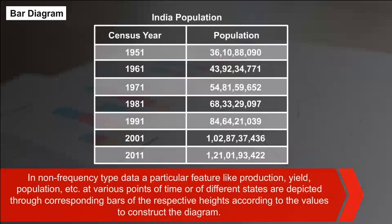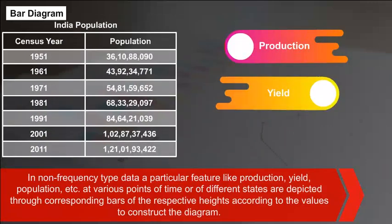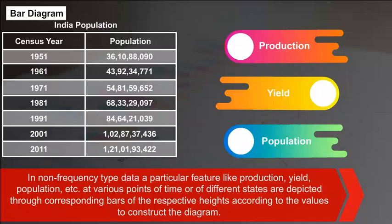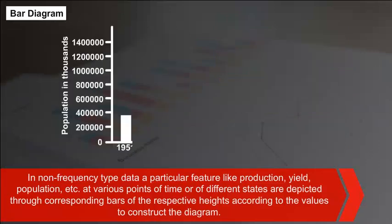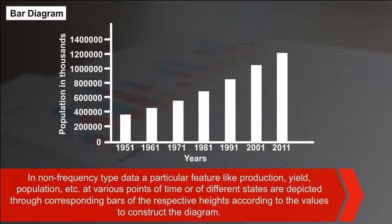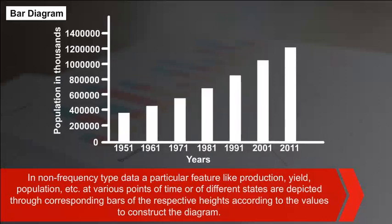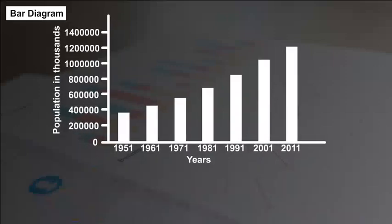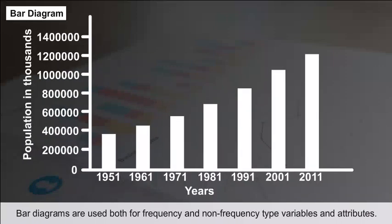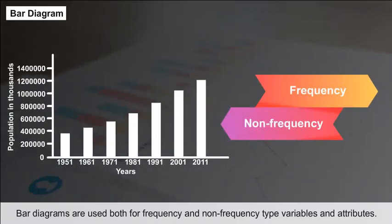Bar diagrams can represent both frequency and non-frequency type data. In non-frequency type data, a particular feature like production, yield, or population at various points of time or for different states is depicted through corresponding bars of respective heights. Bar diagrams are used for both frequency and non-frequency type variables and attributes.